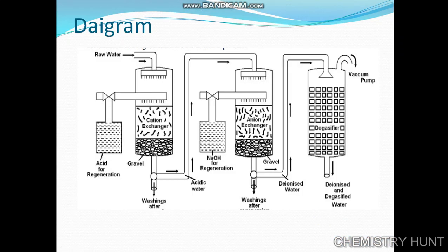Diagram: this is a raw water inlet going into the cation exchanger with gravels. The washings exit here. The acidic water is passed into the anion exchanger, also with gravels and washings. The deionized water which comes out is passed into the degasifier. The cation exchanger is regenerated by acidic solution, and the anion exchanger by alkaline solution.